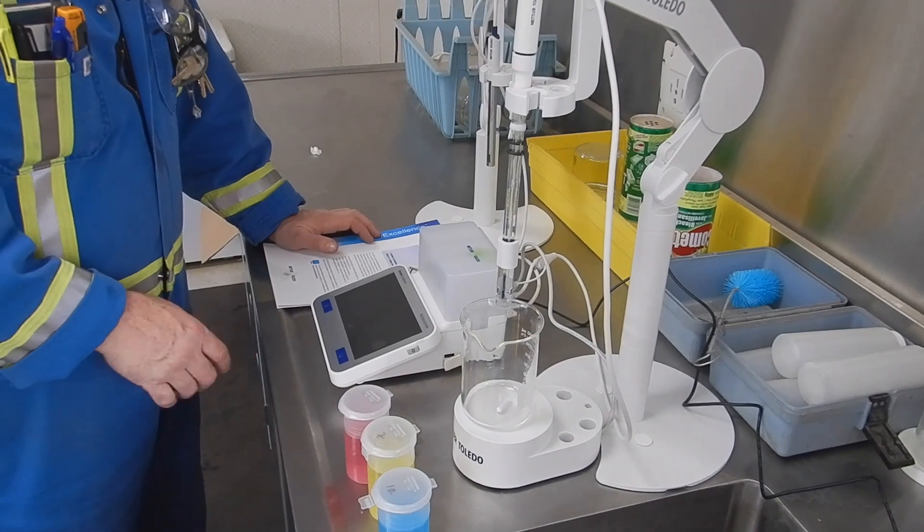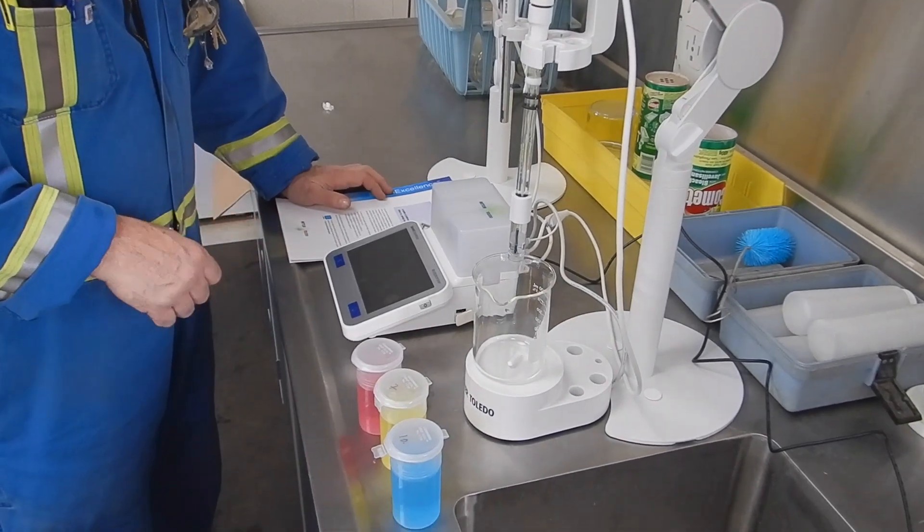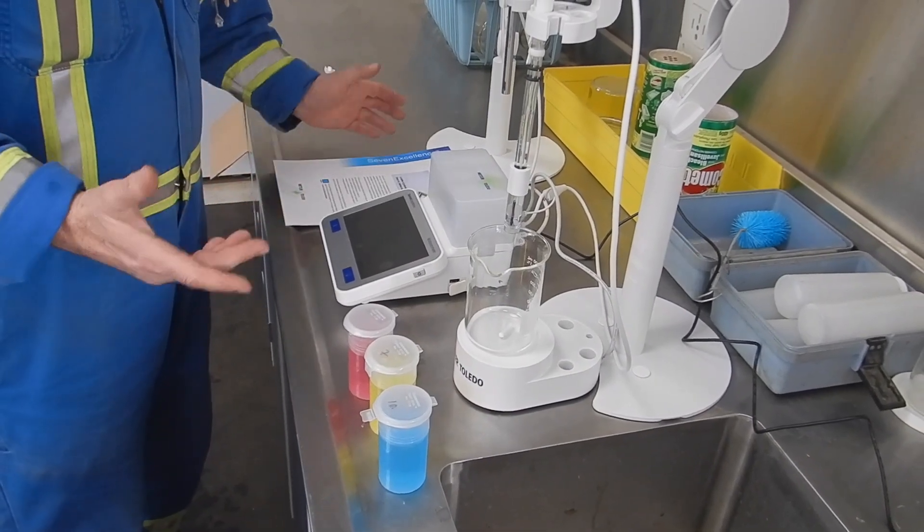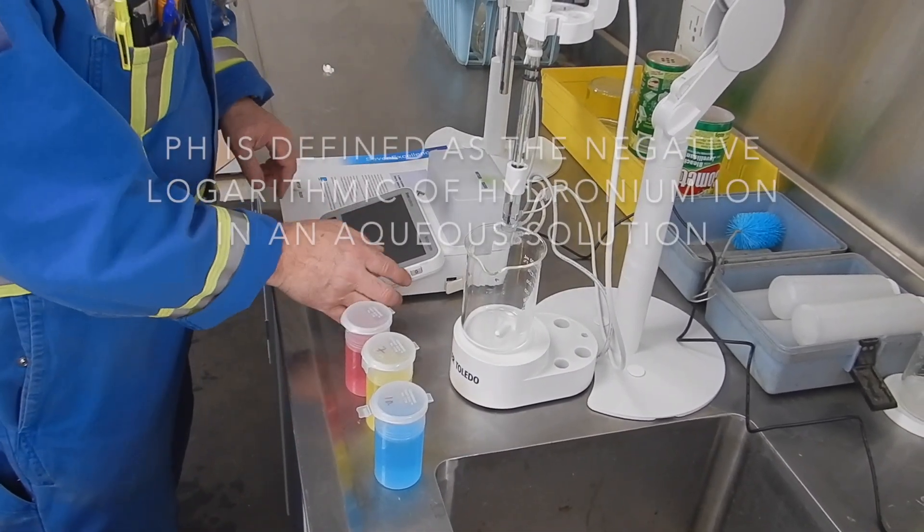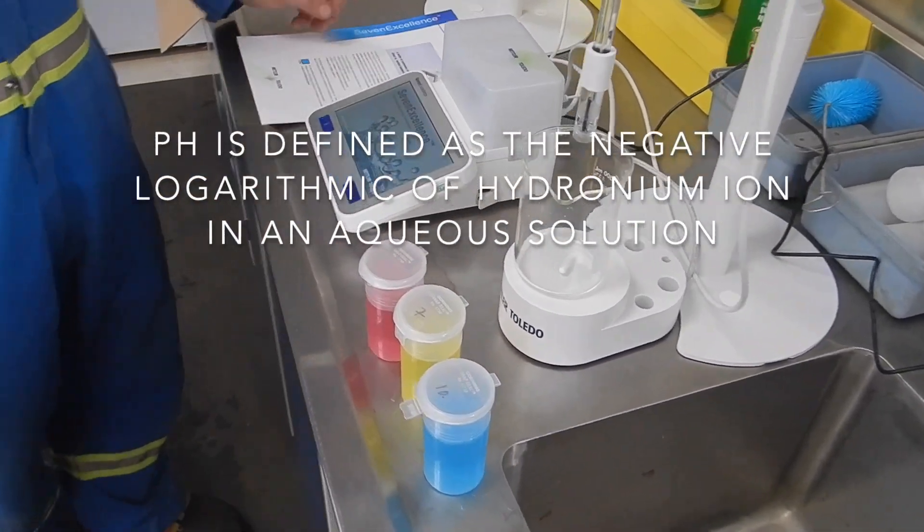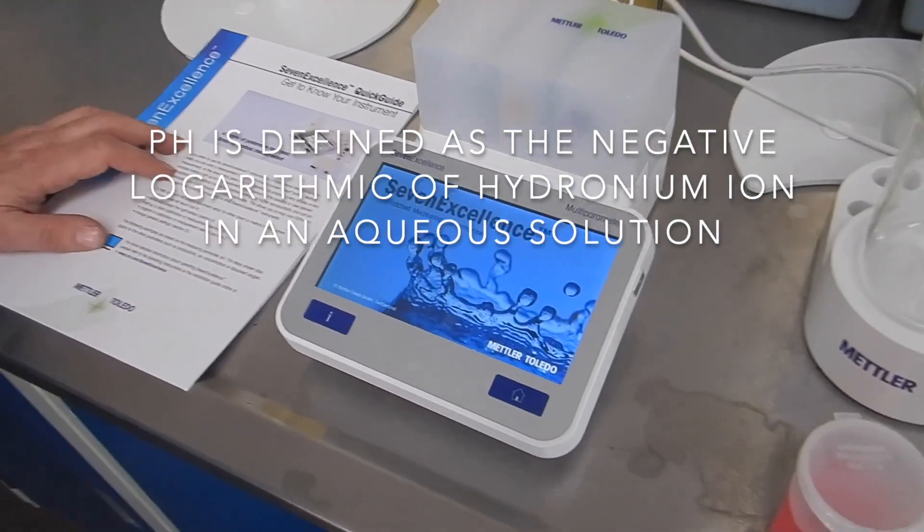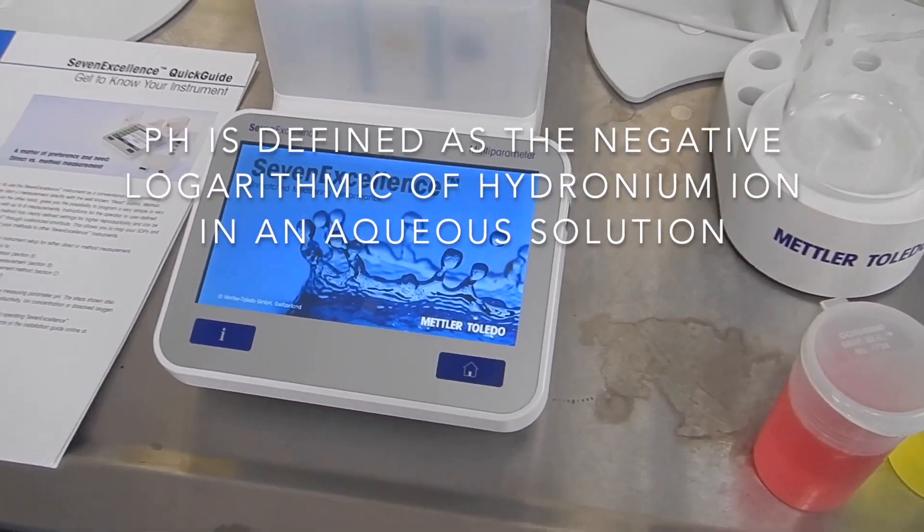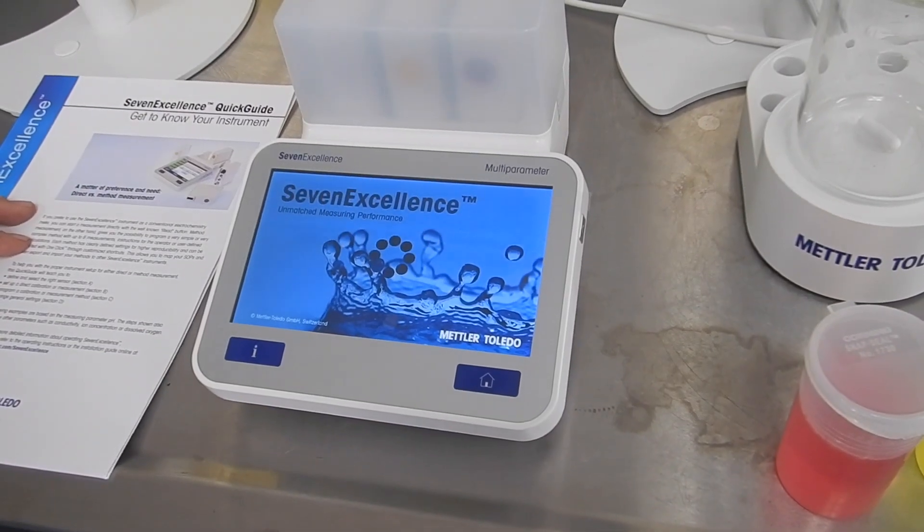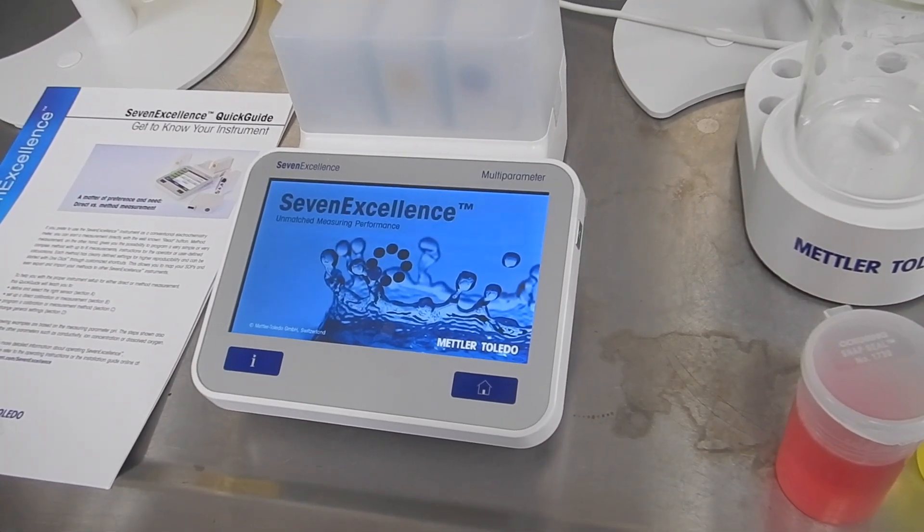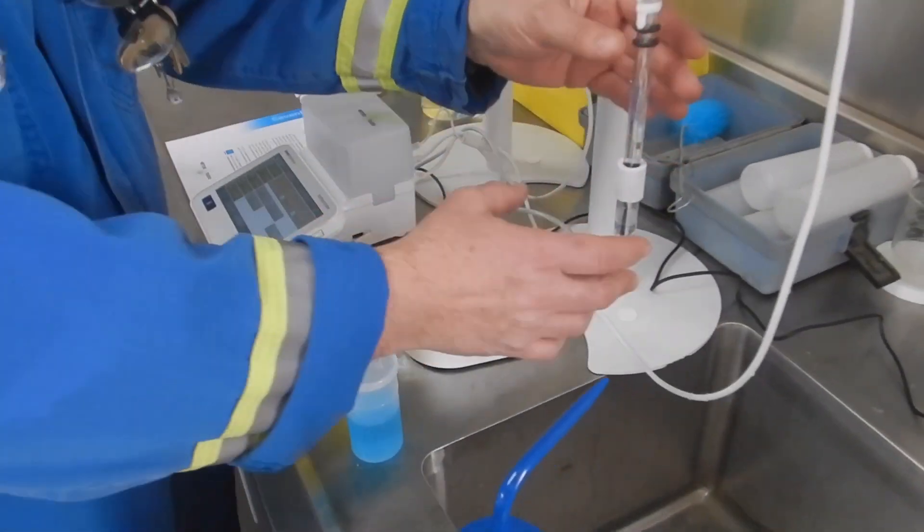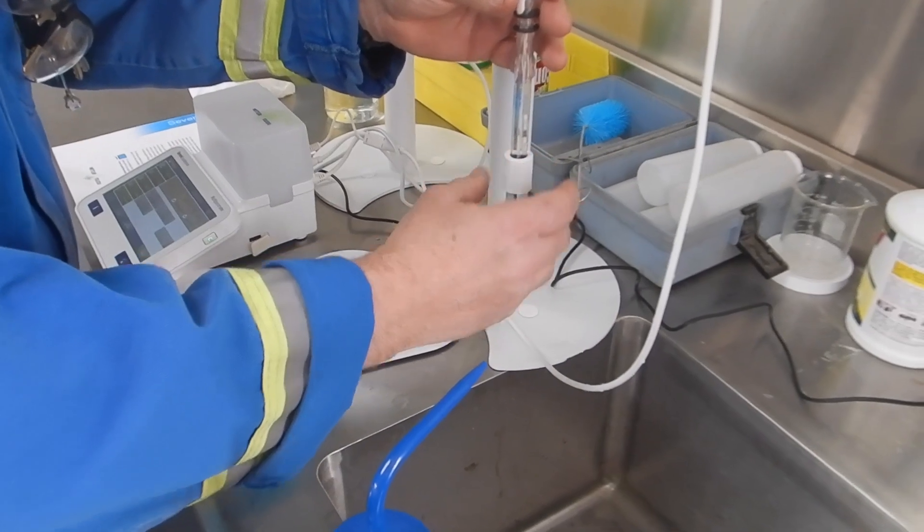Okay, we're going to set up the Mettler Toledo 7 Excellence lab meter. First thing you want to do is there's a power button on the side, push that and it's going to think about it for a while and should come up with your home page. So first things first, we have it in the storage solution.